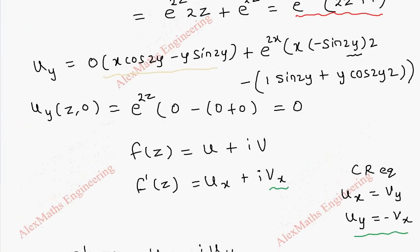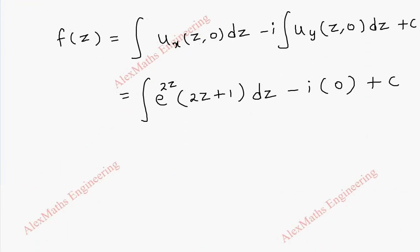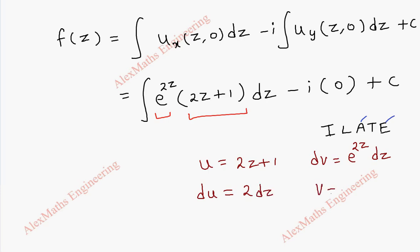Now coming to this integration we have to do integration by parts. So we have a method called ISLATE method where we have exponential and algebraic. The first function is taken as u. Algebraic which is 2z plus 1 and the second function is taken as dv which is e power 2z dz. Now its derivative du is 2 dz. And its integration v is e power 2z by 2.